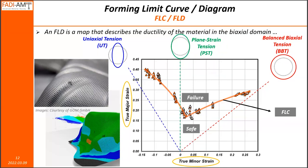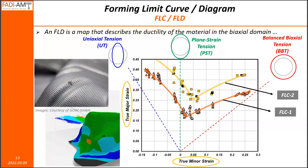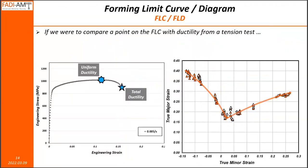An FLC basically describes a margin between the safe forming zone and the zone of failure in the stamping process. It's not unusual to have more than one FLC on an FLD domain. For example, FLC1 could be based on a certain algorithm or method of identifying FLC points experimentally, and FLC2 is another approach that is more conservative. It's also common to see arbitrarily drawn FLCs such as FLC3, drawn for a safety margin of 10% or 20%, which is very common in the circle grid analysis used in the automotive sector.